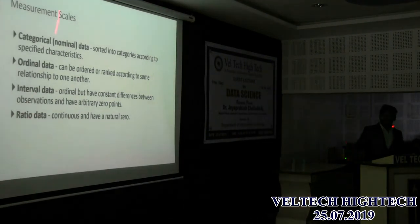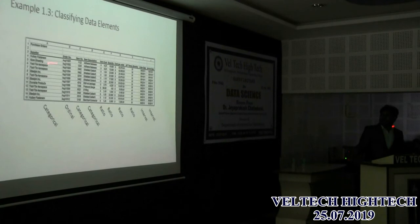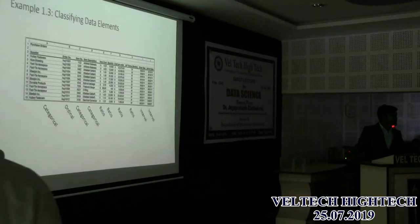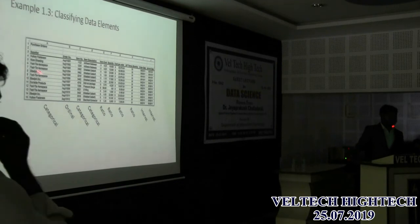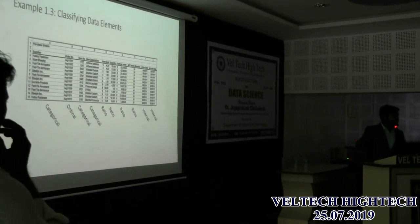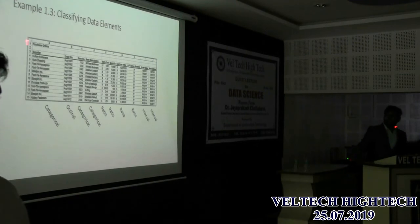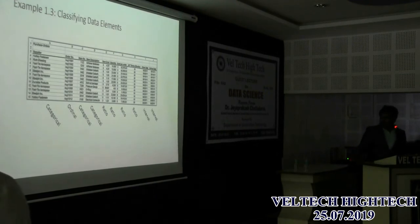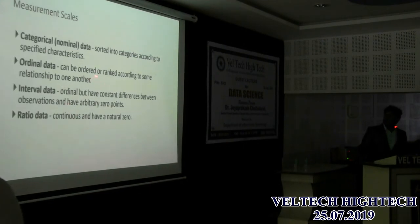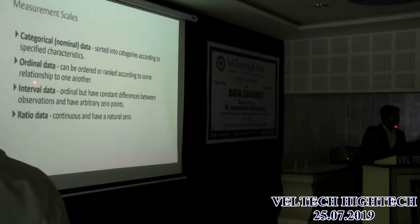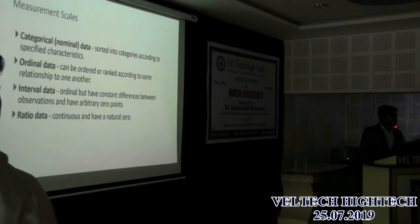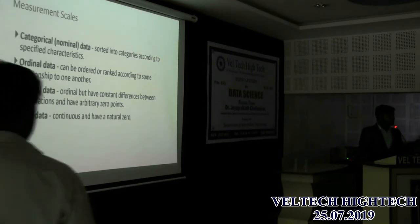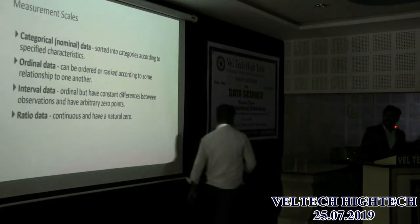Categorical data includes textual things like supplier name or student name — though you can assign a number to it, it remains categorical. Ordinal data can be ordered or ranked according to some relation — for example, customer order dates can be sorted in ascending or descending order. If data can be ordered, it is called ordinal data.